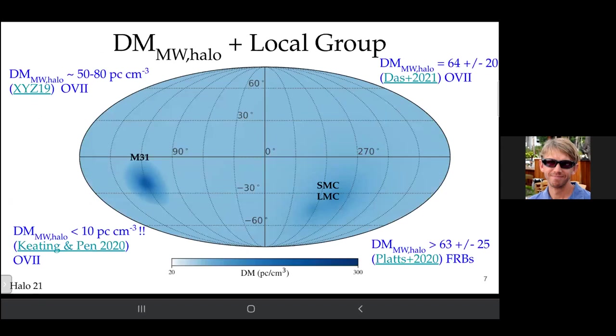For the Milky Way halo, there's a discussion throughout the workshop. We, myself and Yong Zhang, published a model based on data known for the Milky Way and models of how halo gas may be distributed in dark matter halos. That's what this blue diagram is. It also includes estimated contributions from M31 and the Magellanic Clouds. We estimated the dispersion measure to be about 50 to 80 units. This is not well constrained. A subsequent paper by Keating and Pen argues, based on effectively the same data, that the dispersion measure of the Milky Way halo may be less than 10 parsecs per cubic centimeter.